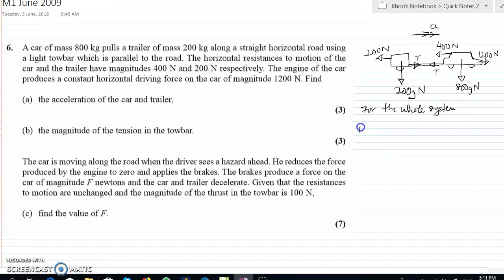Equation of motion is 1200 minus 400 minus 200, the resistance on the trailer, and that's about all the forces equals to Ma. Because we are taking the whole system, we have to consider the total mass. So in this case it would be 200 plus 800, so that would be 1000a.